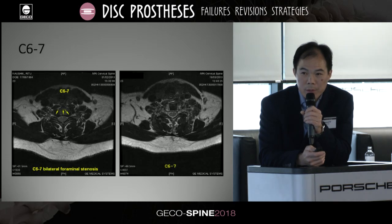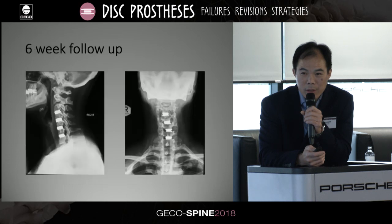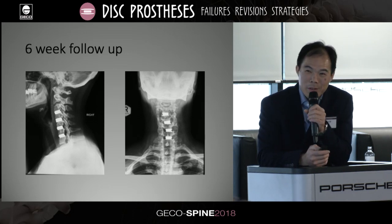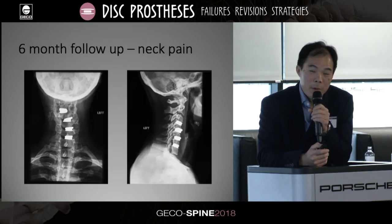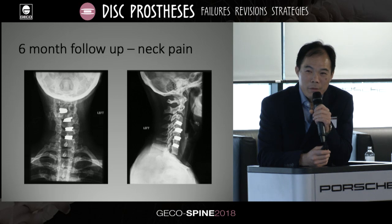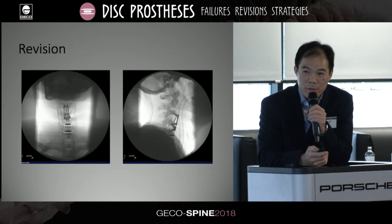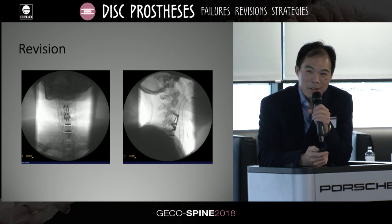Both foramina opened up at C6-7. By the six-week follow-up, the imbalance had become even more pronounced. I kept her under observation, but by six months the whole construct started to look a mess with severe tilting of the implants and she was having significant neck pain. I had to do something, so everything was eventually taken out and revised to a more constrained implant, and she is okay now.